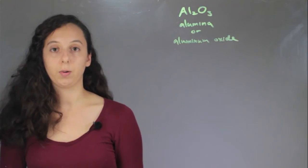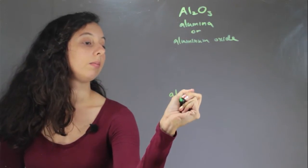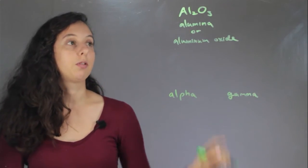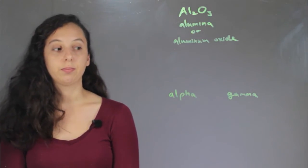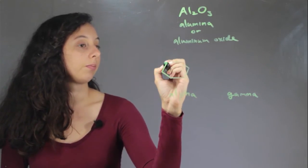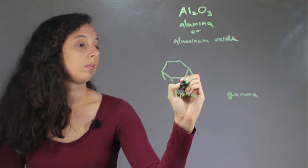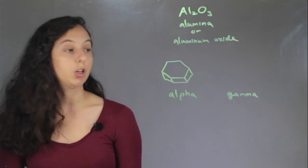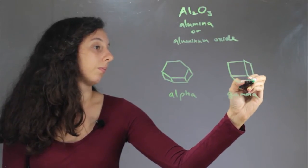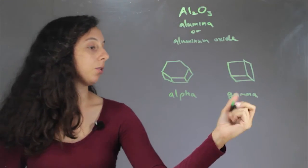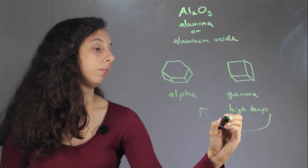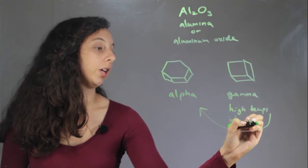As I said before, we're comparing two different types: alpha and gamma. They both have the same chemical formula, but they have different shapes. Alpha is actually crystals in the shape of a hexagon, and gamma is crystals in the shape of a cube. And if you heat gamma up to high enough temperatures, it will convert into alpha. So alpha is more stable in terms of temperatures.